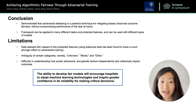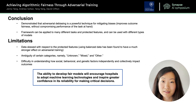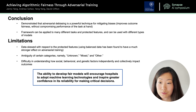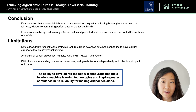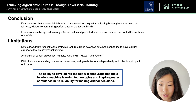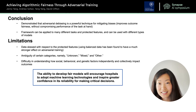To conclude, we've demonstrated that adversarial debiasing is a powerful technique for mitigating biases. Specifically, we showed that we can improve outcome fairness without compromising performance of the task at hand. The framework shown can be applied to many different tasks and protected features and can be used with different types of models. There are some limitations, including that our data was skewed with respect to the protected features, and using balanced data has been shown to have a much stronger effect on adversarial training. There's ambiguity in certain categories for ethnicity — namely unknown, mixed, and other — and for biological tasks there's great difficulty in understanding how social, behavioral, and genetic factors independently and collectively impact outcomes.